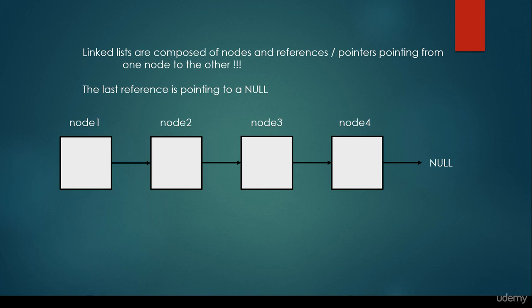In this situation, the first node is node 1. It is pointing to node 2, it is pointing to node 3, it is pointing to node 4, and node 4 is the last node because it is pointing to a null.